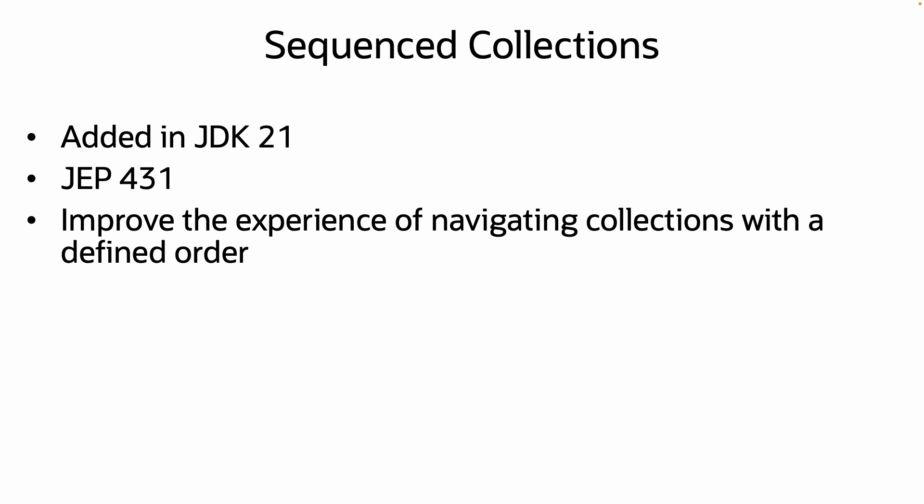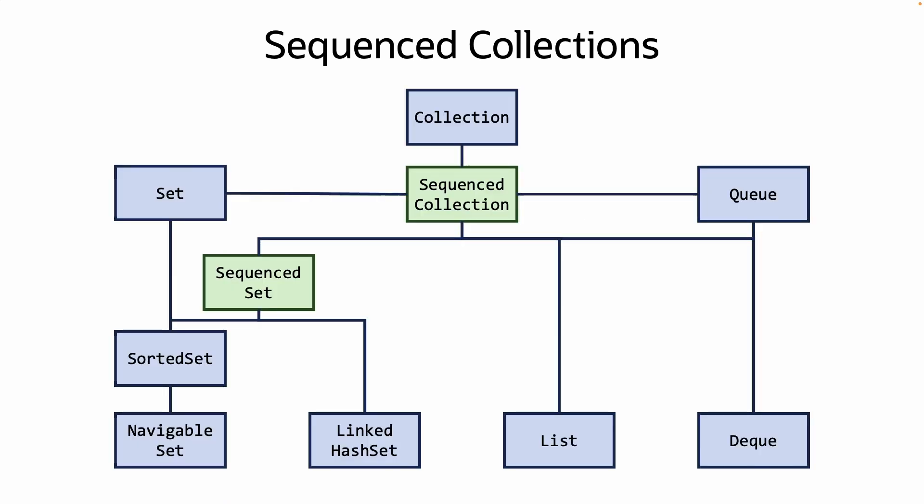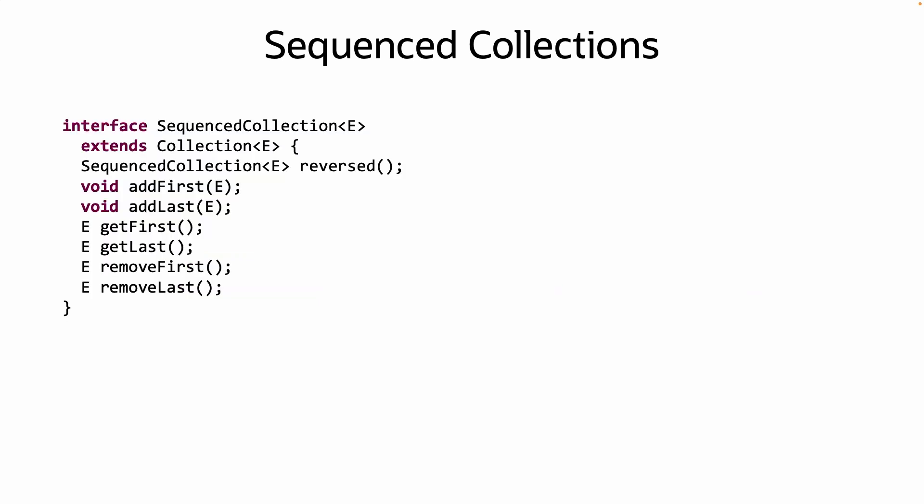Make a note of that, we will return to that point later. The new sequence collection API is a series of interfaces that have been inserted into the collections hierarchy. For collections, there is SequenceCollection and SequenceSet. SequenceCollection provides a new method reversed, which returns a reversed view of the underlying collection. Depending on the collection implementation,